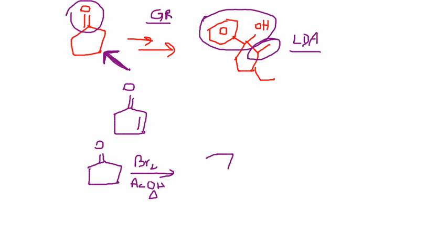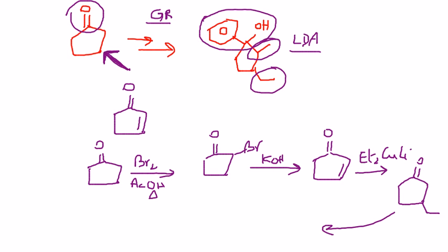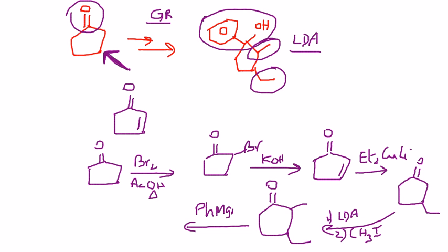First, treat with bromine and acetic acid, heating to give the alpha-bromo product. Treat that with KOH to give the alpha-beta unsaturated ketone. Treat with Et2CuLi (diethyl cuprate) to add the ethyl group. Then treat with LDA followed by methyl iodide or methyl bromide to place the methyl group at alpha. Finally, treat with the Grignard reagent (phenyl) followed by hydrolysis. That gives you Ph, OH, methyl, and ethyl — and you're done.